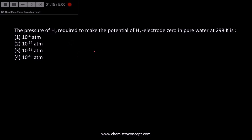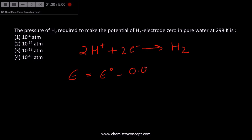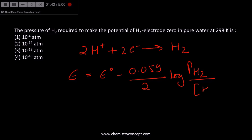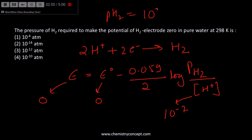The next is a numerical. Two hydrogen ions take two electrons and get converted into H2. The Nernst equation is: E = E⁰ − (0.059/2) × log([P(H2)] / [H⁺]²). Since this is neutral or pure water, the concentration of hydrogen ions is 10⁻⁷. The standard electrode potential E⁰ is 0. Solving for the value of pressure, you get 10⁻¹⁴ atm.